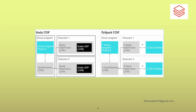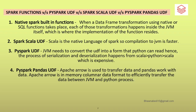The diagram on screen shows how Scala UDFs and PySpark UDFs work in the Spark architecture. You have a driver program in Python, and when a Scala UDF runs it executes directly on Executor 1 and Executor 2 — though serialization and deserialization still occurs. For a PySpark UDF, the Spark executor's JVM must communicate with the Python runtime, adding an extra step. That is the key architectural difference. I hope you found this video useful — please like, share, and subscribe to the channel.